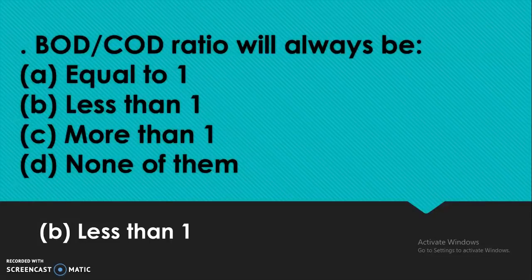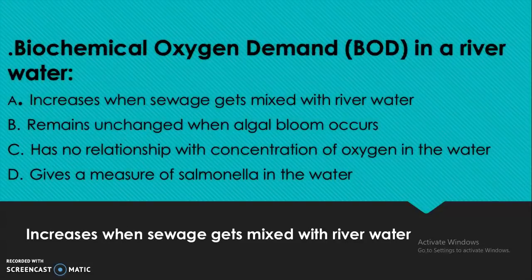The ratio of BOD and COD — biochemical oxygen demand and chemical oxygen demand — will always be less than one. Biochemical oxygen demand in river water increases when sewage gets mixed with the water.